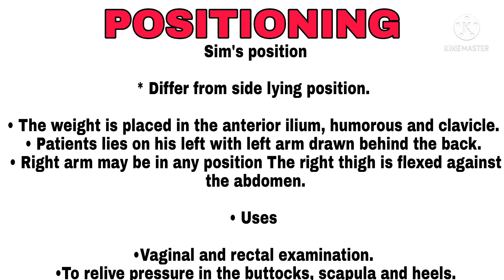Sims Position: Differs from Side-Lying Position. The weight is placed on the anterior ilium, humerus, and clavicles. Patient lies on his left with the left arm drawn behind the back; the right arm may be in any position; the right thigh is flexed against the abdomen. Uses: vaginal and rectal examination, and to relieve pressure on the buttocks, scapula, and heels.